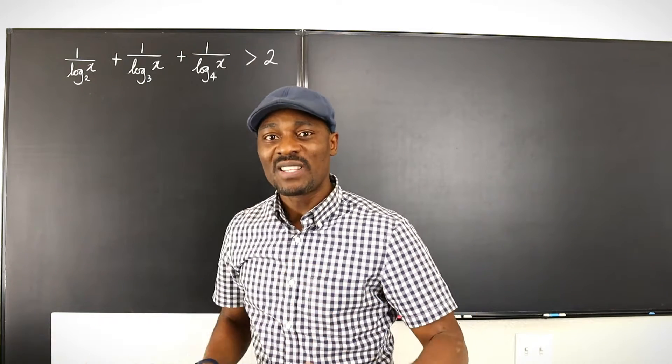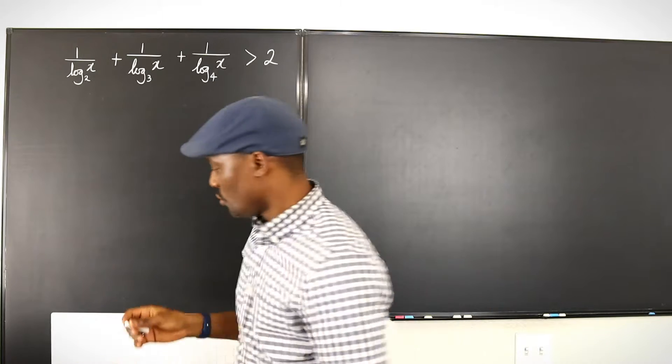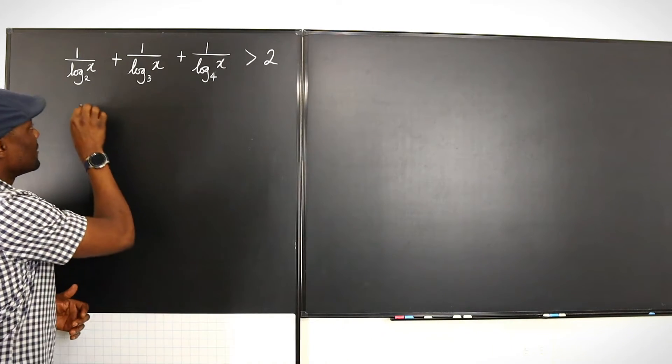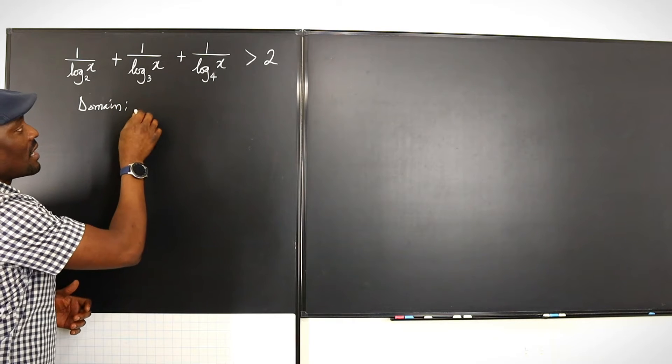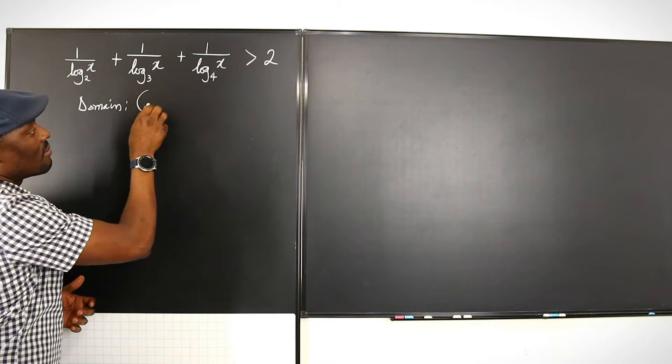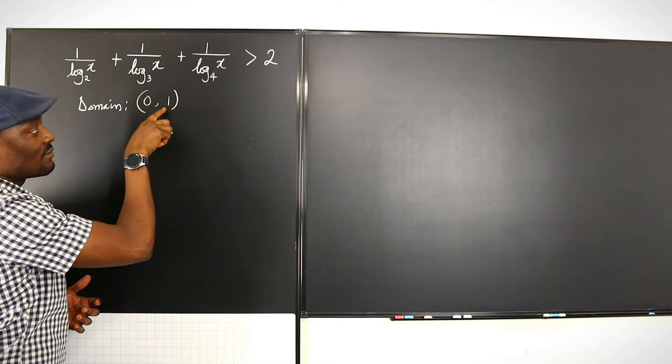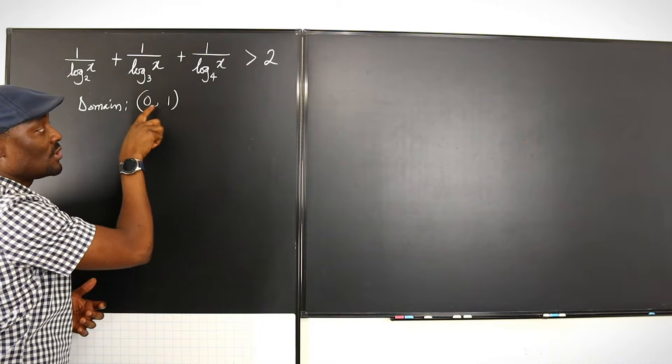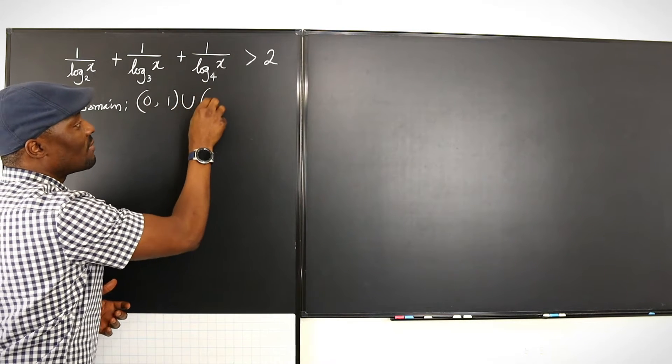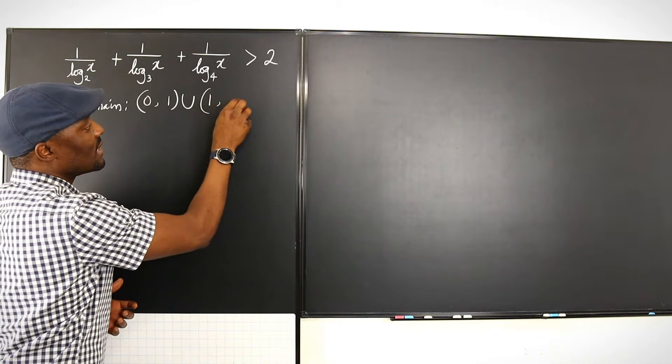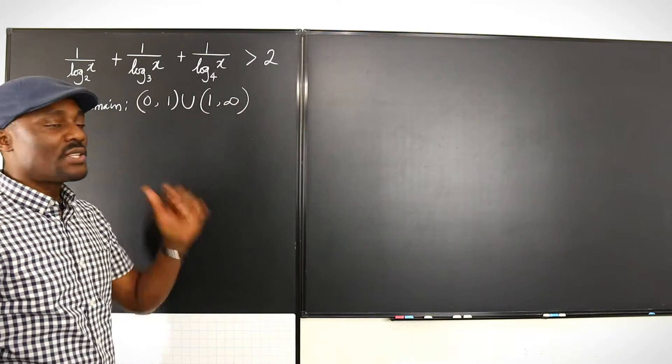Let's start with getting the domain out of the way. The domain is such that you're going from zero to one, because you can have values between zero and one, but you can't have zero and you can't have one. And you can also have all values that are greater than one up to infinity.